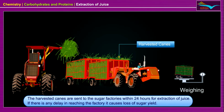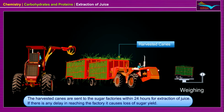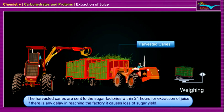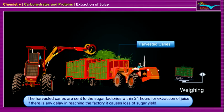The harvested canes are sent to the sugar factories within 24 hours for the extraction of juice. If there is any delay in reaching the factory, it causes loss of sugar yield.